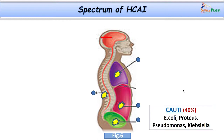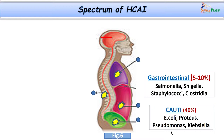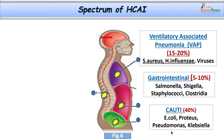Let us understand the different types of healthcare associated infections. The most common is catheter associated urinary tract infections, abbreviated as CAUTI, which can be as high as 40 percent. Causative organisms include Escherichia coli, Proteus, Pseudomonas, and Klebsiella. The next group is gastrointestinal infections, up to 5 to 10 percent, caused by Salmonella, Shigella, Staphylococci, and Clostridium difficile. Ventilator associated pneumonia, called VAP, contributes up to 15 to 20 percent; organisms include Staphylococcus aureus, Haemophilus influenzae, and some viruses.